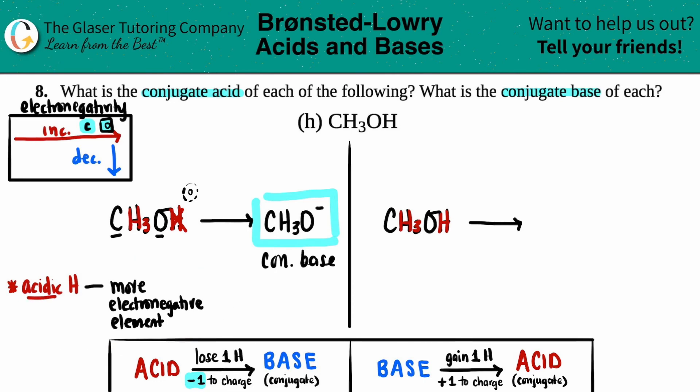It goes back to what we said before. Those acidic hydrogens, you can have multiple sometimes, they're always going to be bound to the more electronegative element. So since we already said that oxygen was the more electronegative element out of carbon and oxygen, that means that you will add onto this hydrogen.